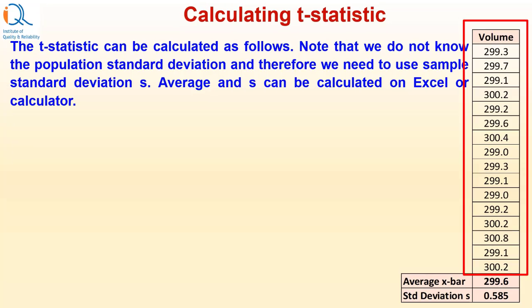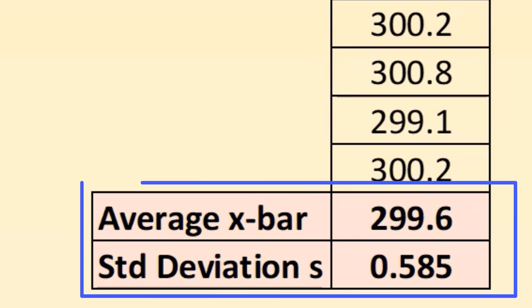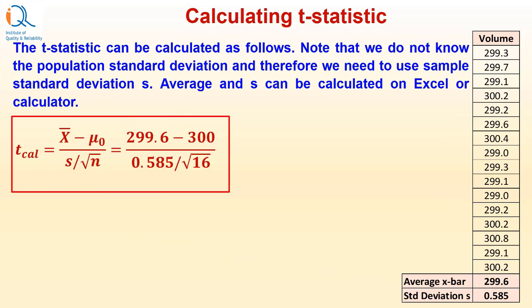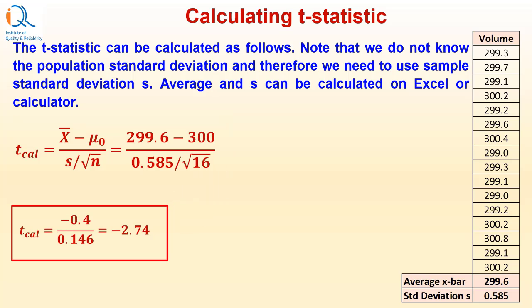This is the data and at the bottom of the data, you can see that the calculated value of average x bar is 299.6 and standard deviation s, which is the sample standard deviation, is 0.585. The t calculated is x bar minus mu0 upon s upon square root n and that equals 299.6 minus 300 upon 0.585 upon square root 16 and it works out to be minus 2.74.